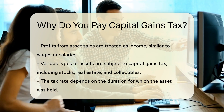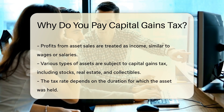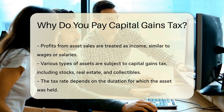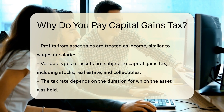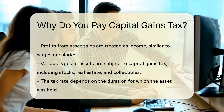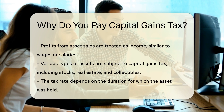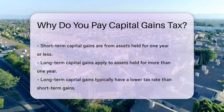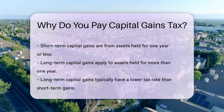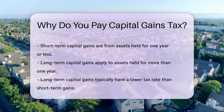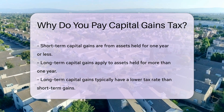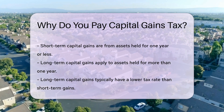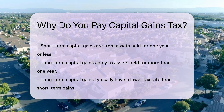Different types of assets are subject to capital gains tax, including stocks, real estate, and collectibles. The rate at which you pay this tax can vary based on how long you held the asset. Short-term capital gains arise from assets held for one year or less, while long-term capital gains apply to assets held for more than one year. Generally, long-term capital gains are taxed at a lower rate than short-term gains.